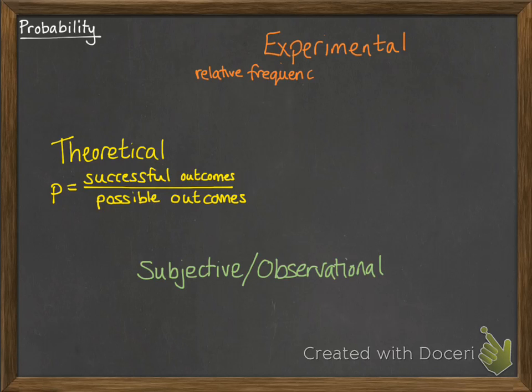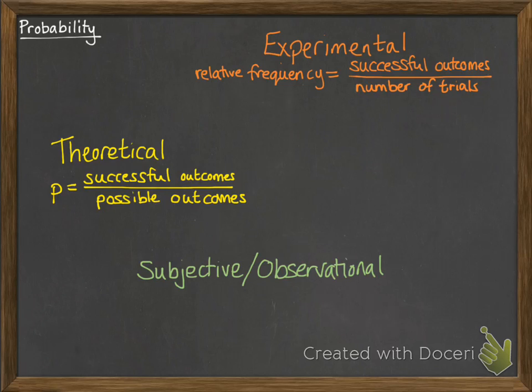Experimental is when it's based upon actually doing an experiment and seeing what happens. In that case we call it relative frequency. We record the number of times that we got a success and we divide it by our number of trials.